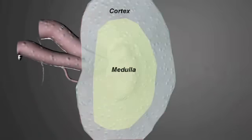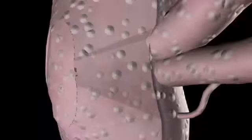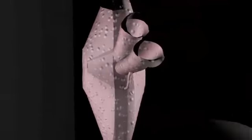The outer layer of the kidney is called the cortex. The inner layer is the medulla. This is where we have millions of special structures called nephrons. We will now zoom in to a single nephron.